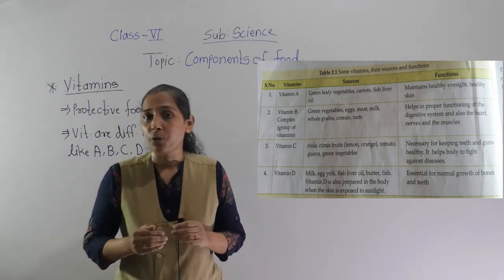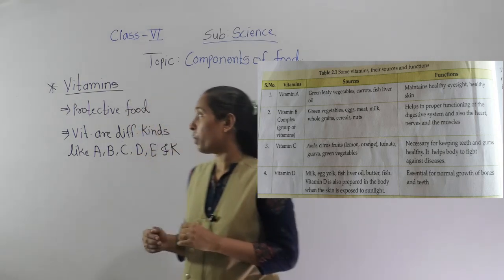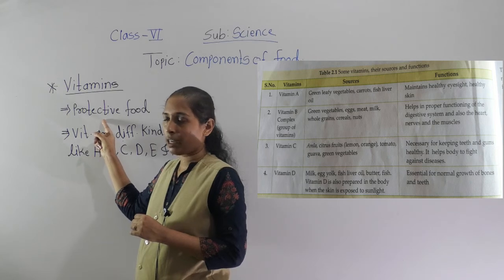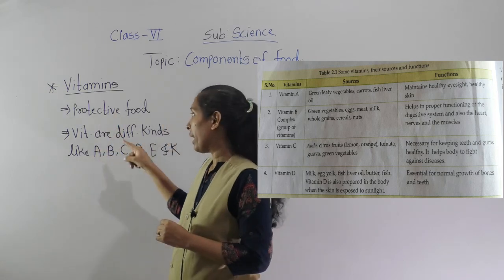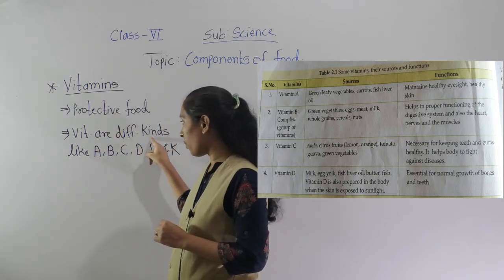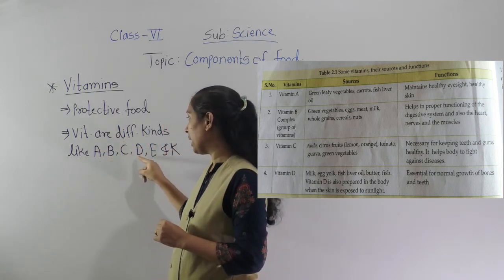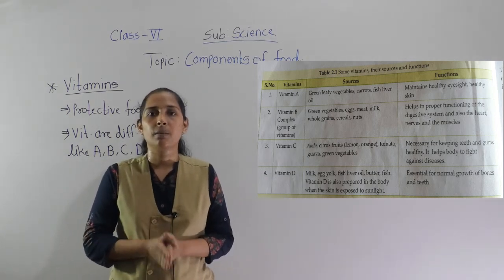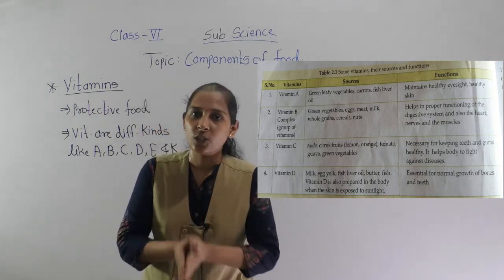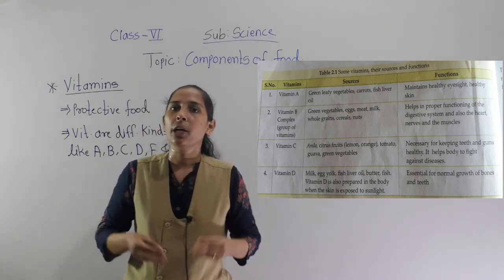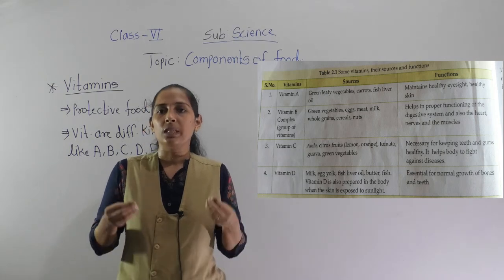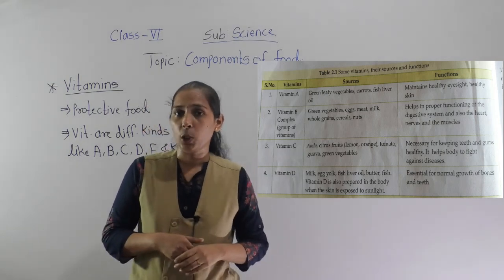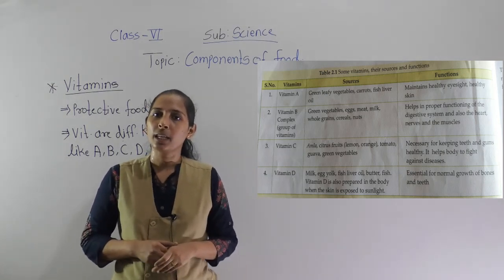So this is all about today's lesson. We have discussed that vitamins are also called protective food, and the different kinds of vitamins are A, B, C, D, E, and K. We also discussed their sources and functions. Thank you, and I will see you in the next video. Goodbye!